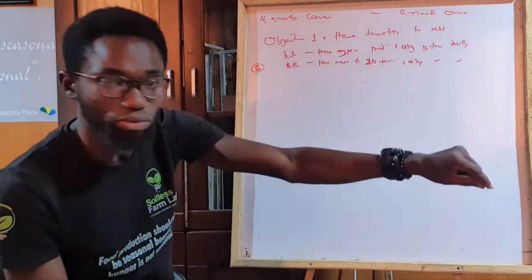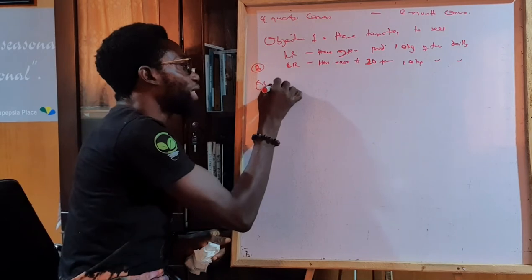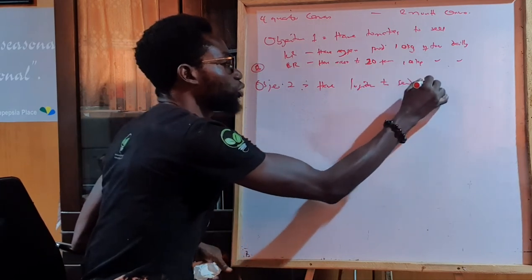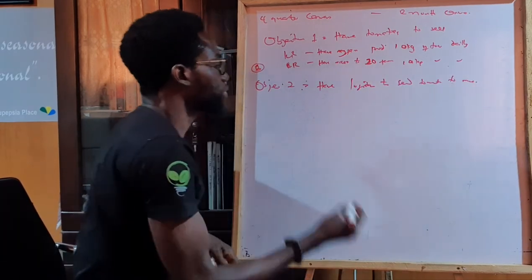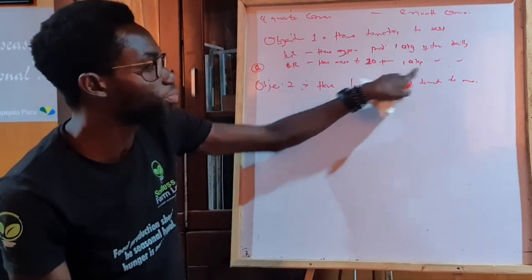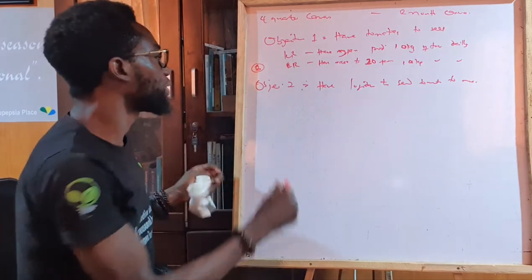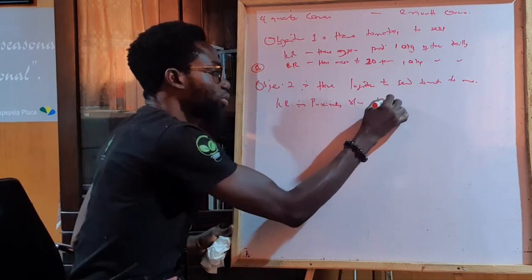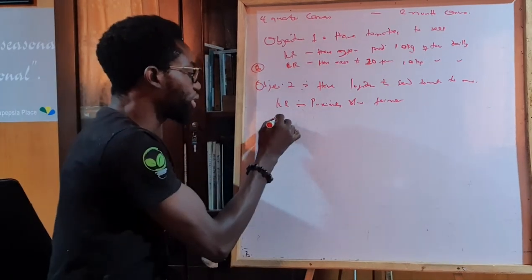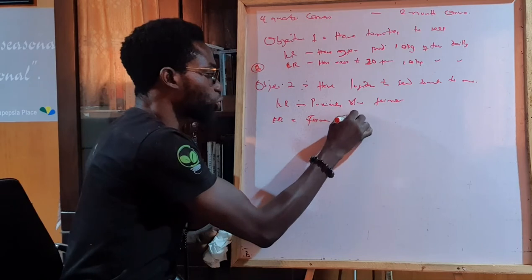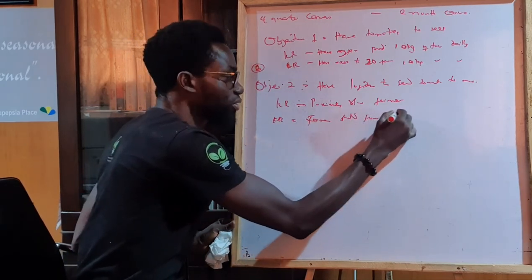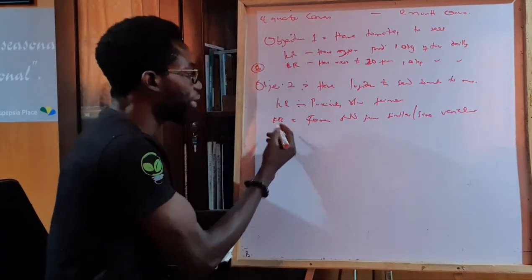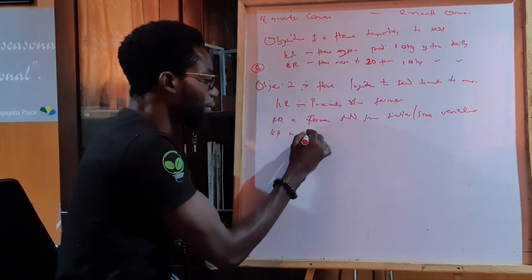That is not enough — I will still need objective two: have logistics to collect the tomatoes from these 20 farms to where I am. For this to be possible, key result one is there should be close proximity between farmers, and key result two is farmers should grow similar or the same varieties.